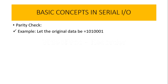The parity check is used to ensure accurate data transmission. What we do is append a parity bit to the original data to create an odd or even number of ones. In the parity check, we have either even parity or odd parity. Let me explain the concept with an example. Here I am assuming that the original data we want to transfer is 1010001. Now, if I want to add the parity bit to this data,